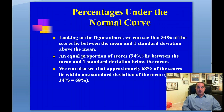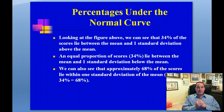When you look at the normal curve, you can see that 34% of the scores lie between the mean and one standard deviation above the mean. An equal proportion of scores — 34% — lie between the mean and one standard deviation below the mean. So approximately 68% of the scores lie within one standard deviation of the mean.